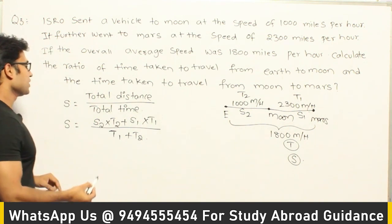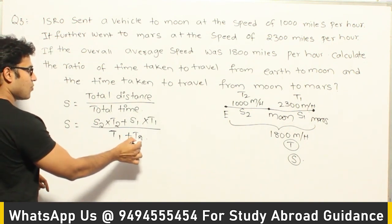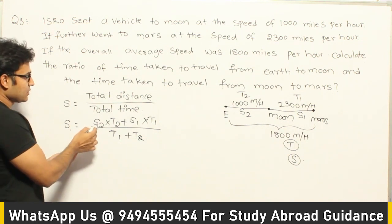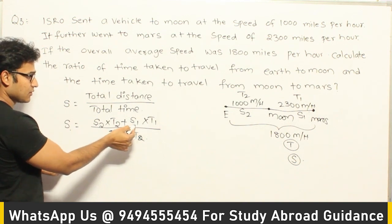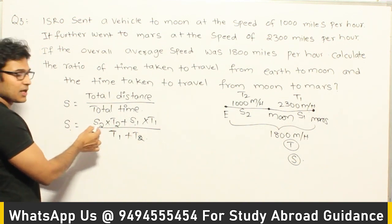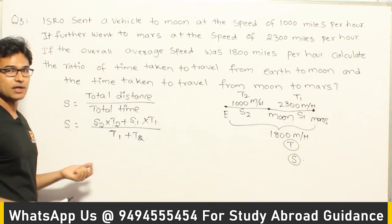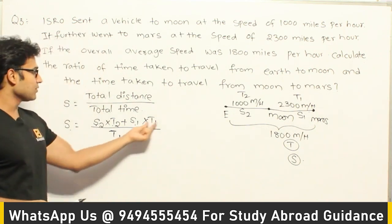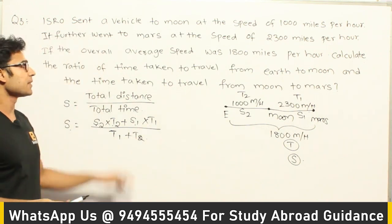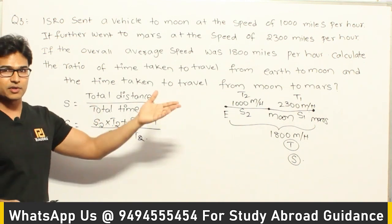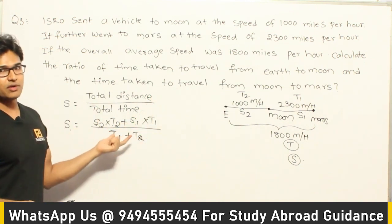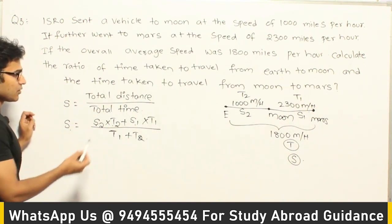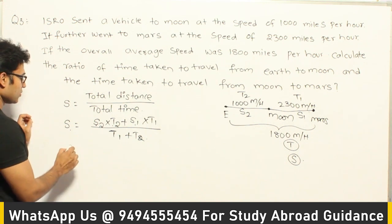If you observe this formula, it is in the form of averages. S1 and S2 are averages for each group, and T1 and T2 act like N1 and N2. They are asking for the relationship between T1 and T2. You can cross multiply and simplify to find the ratio between T1 and T2.